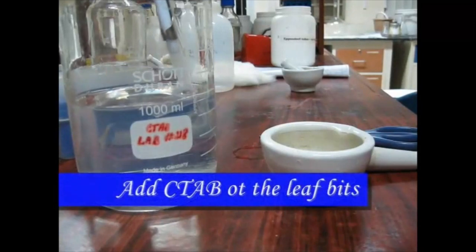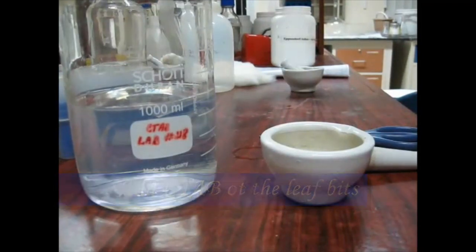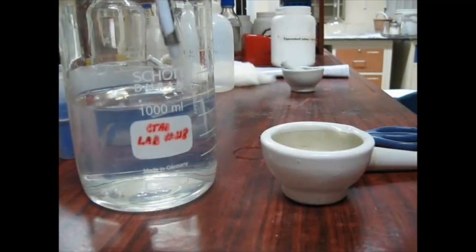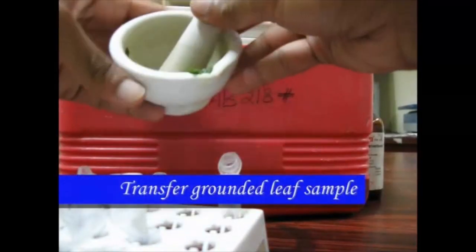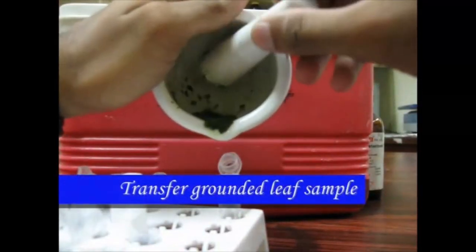Now, let us add 400 to 500 µL of CTAB into the pestle and mortar containing leaf bits. During grinding process, bubble formation should be avoided. Then transfer the ground leaf sample into an Eppendorf tube.